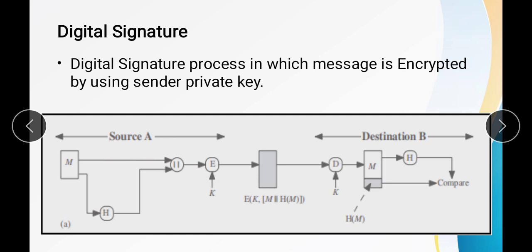We can understand this whole process using the diagram below. Suppose we have a source — the sender — and the destination — the receiver. The sender wants to send message M using the digital signature technique. First, he encrypts the message and generates a hash. That hash is then appended with the message, and that combined message is encrypted using key K, giving us a hashed message encrypted with the key.